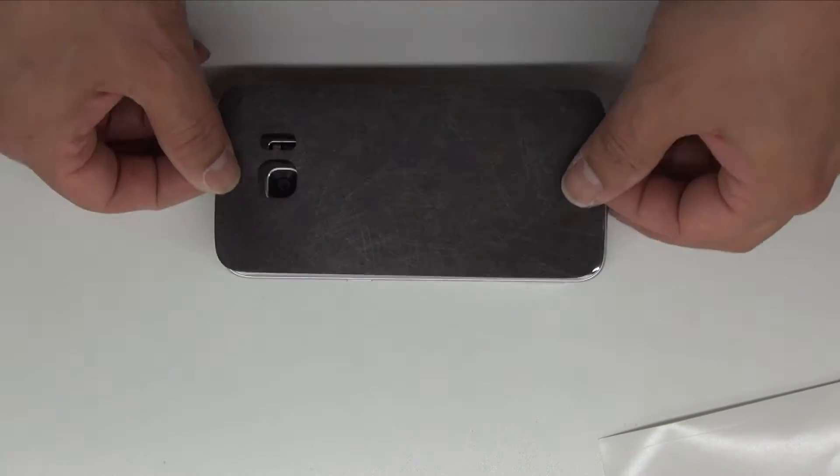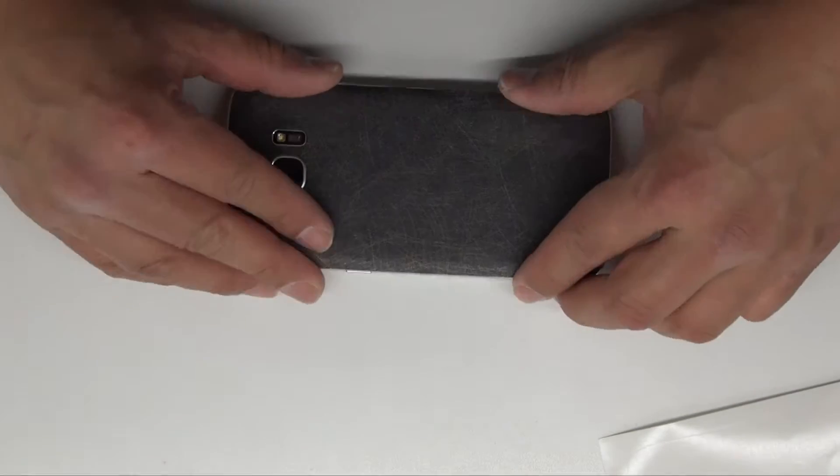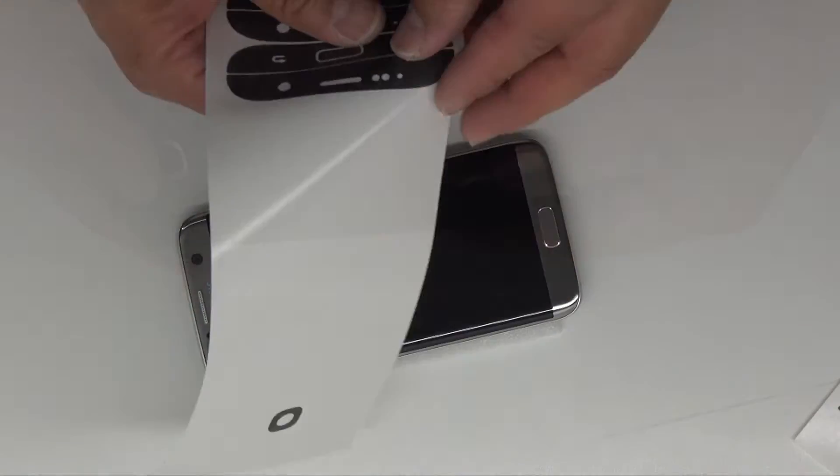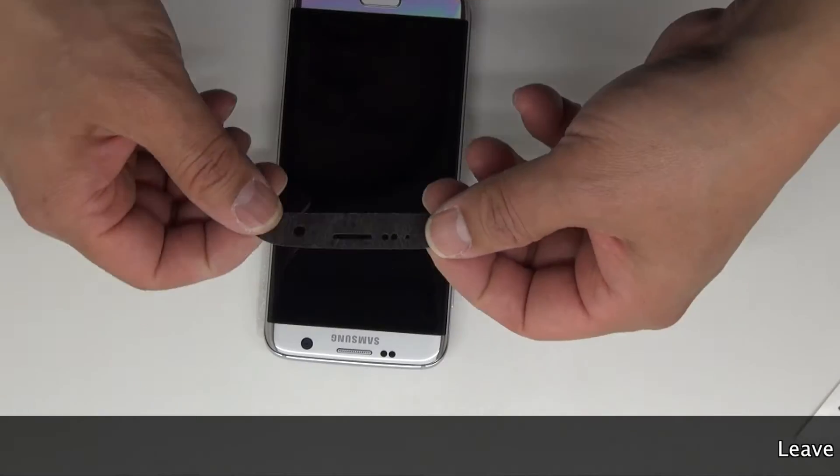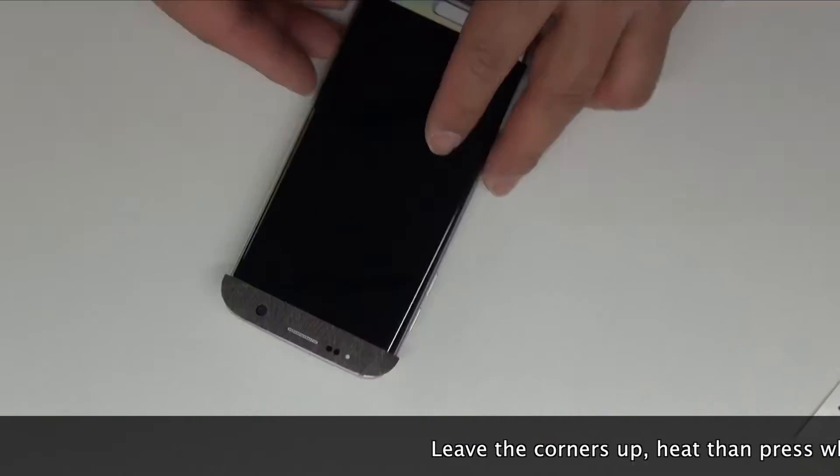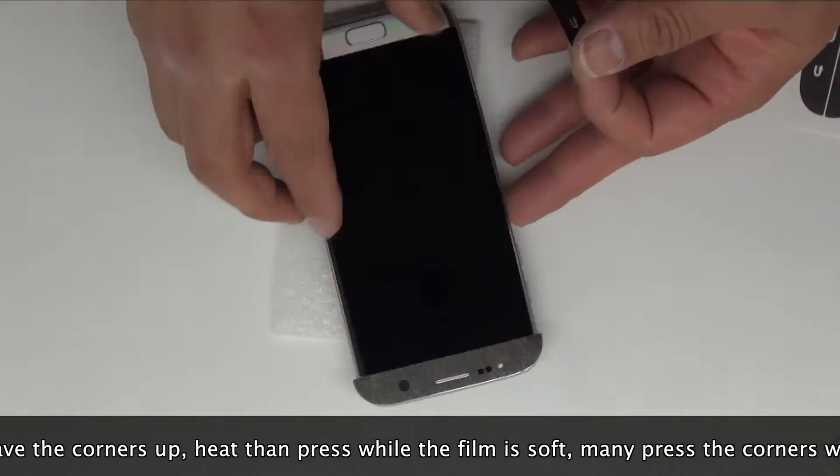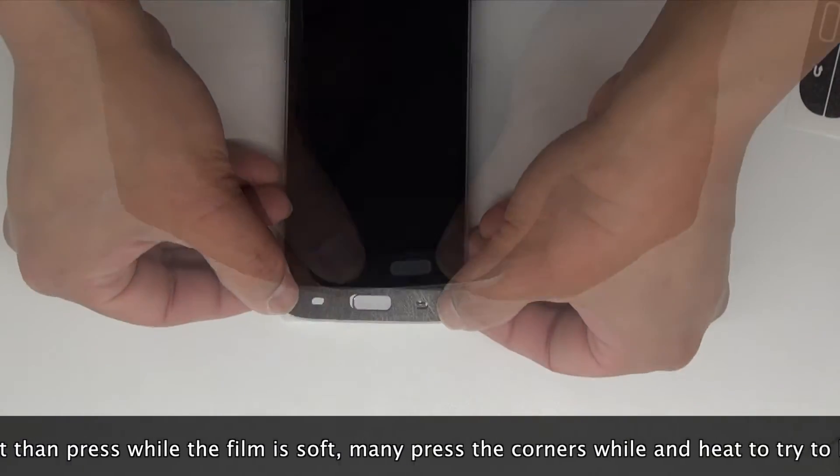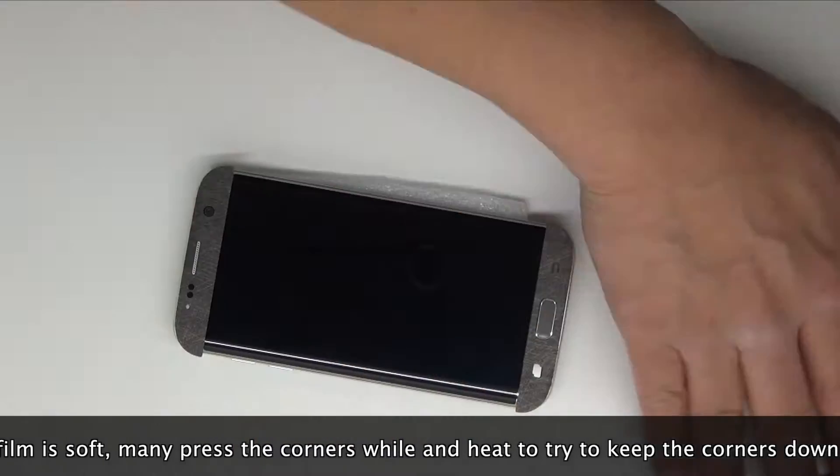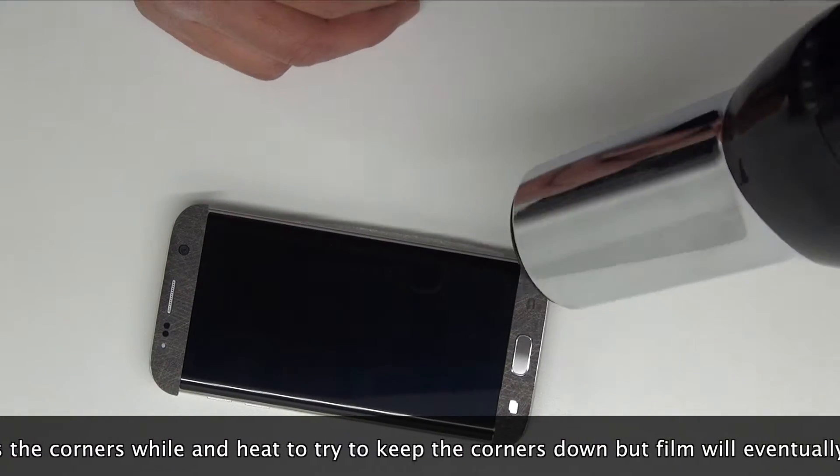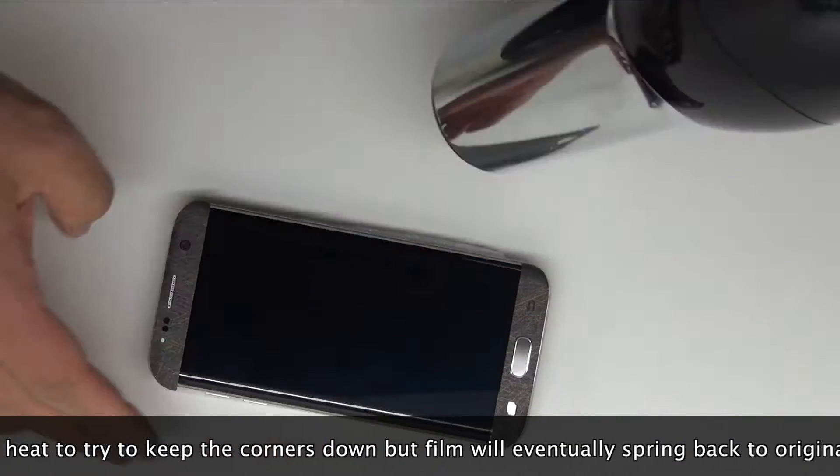Next, align the camera and make sure it's straight, then push the air out. Center and place the film, making sure the corners are up. Do not press until they are heated and softened. Once the corners soften, then you want to press so it doesn't spring back up.